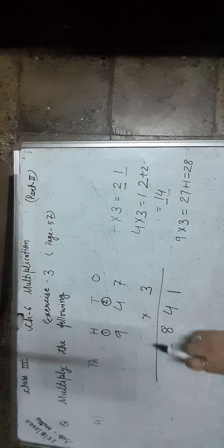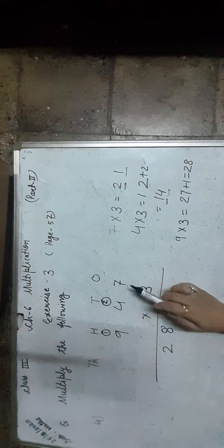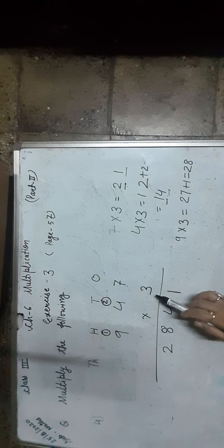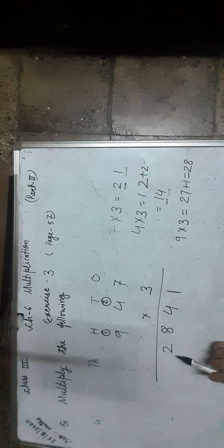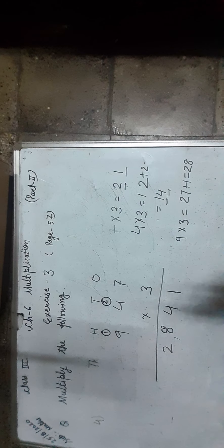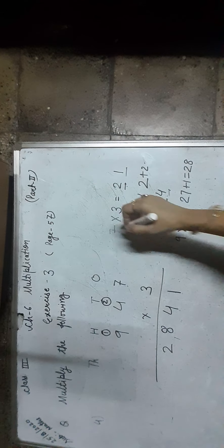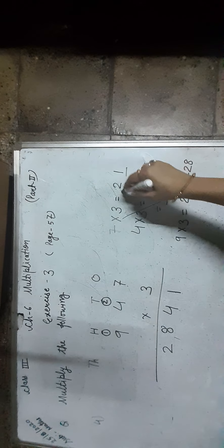The product of 947 and 3 is 2,841. No need to write rough work.